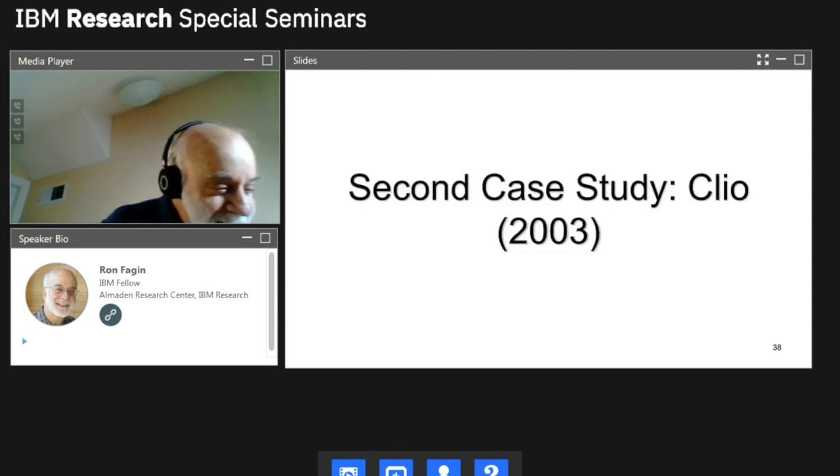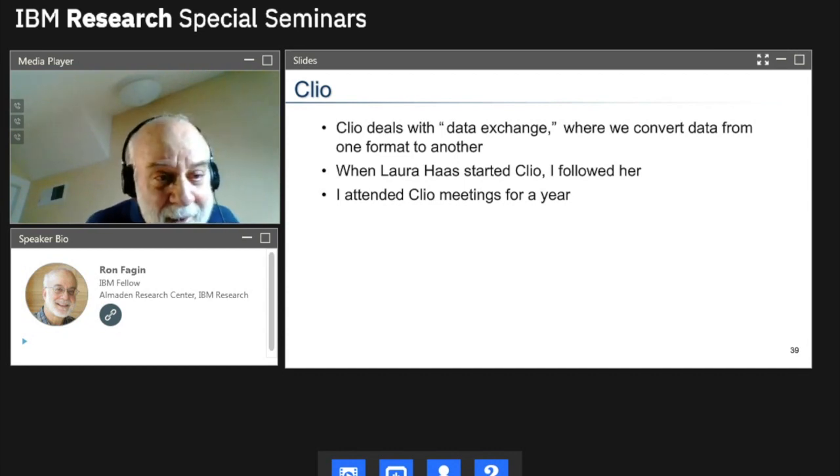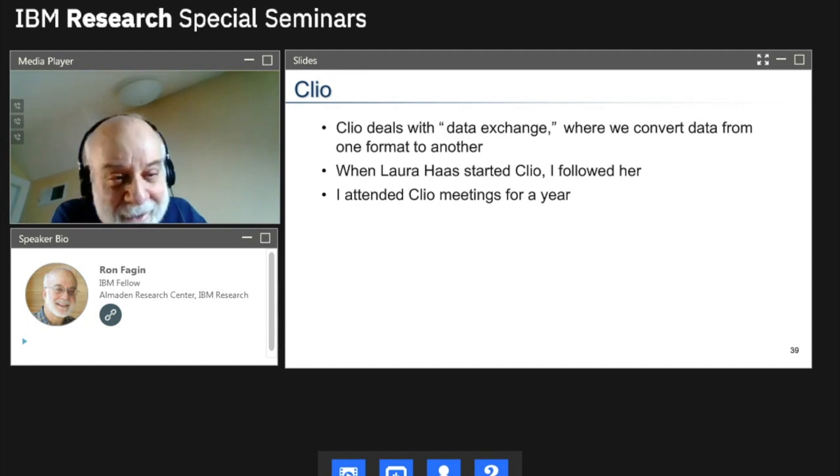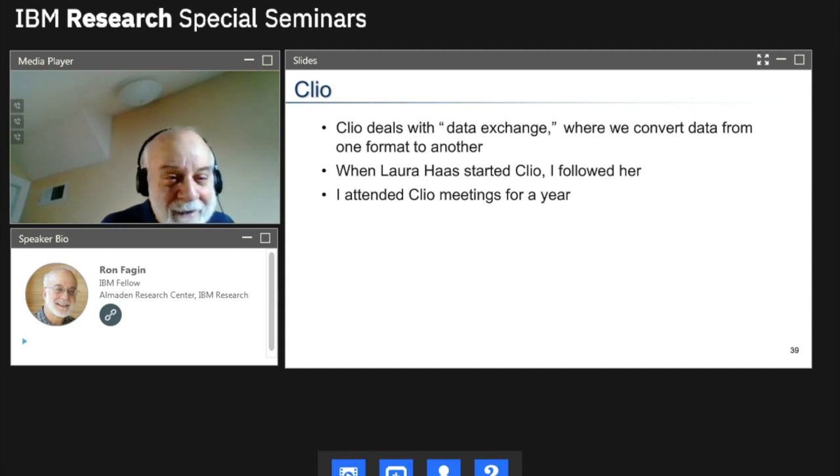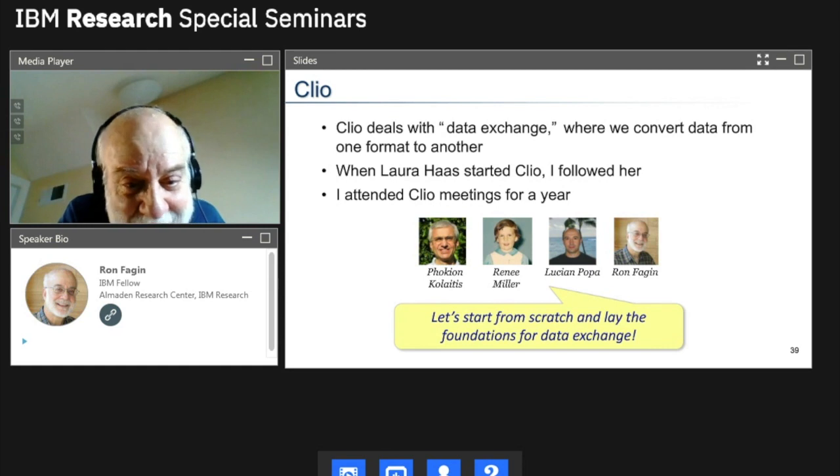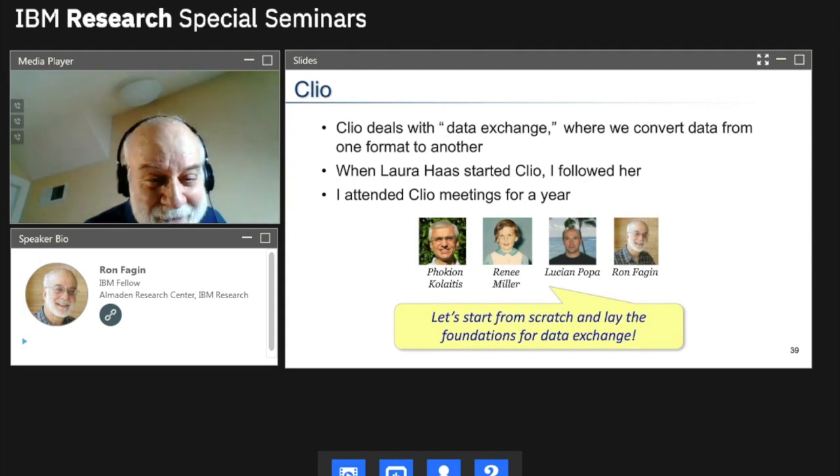Second case study, Clio. So now Clio deals with data exchange. I'll explain in a moment what that means, where you convert data from one format to another. Now, Laura Haas left GARLIC after successfully implementing it and started Clio and I followed her. She was my manager. I was in the theory group, but I thought, Laura, you know, I had a wonderful success with Laura before I will start going to Laura's meetings. And I actually sat in Clio meetings for a full year. And then something happened. So the four of us, Phokion Kolaitis, Renée Miller, Lucian Popa, and I said, look, let's do, how do we do data exchange from scratch? If we didn't have all this work that's gone into Clio, just start from scratch what we do. By the way, Renée Miller is very sensitive about her picture. She will not allow her picture to be public. So that's a picture of Renée Miller, age three. So she allowed me to use that. She was not a child prodigy.